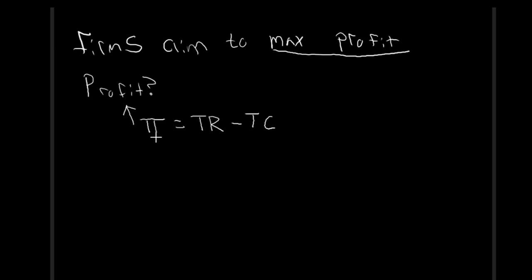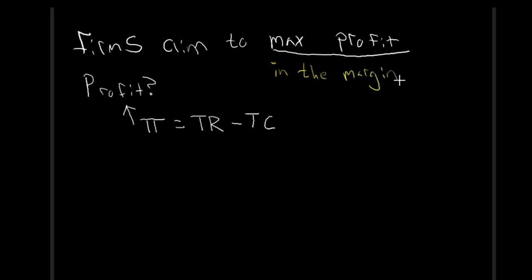If we recall back, one of our principles of economics is that agents act in the margin. Same thing here — firms aim to maximize profit and they will maximize their profit in the margin. Don't get too caught up on that right now; we'll see what this means as we carry on. So: firms aim to maximize profit and they'll do so in the margin. Profit itself is total revenue minus total cost.